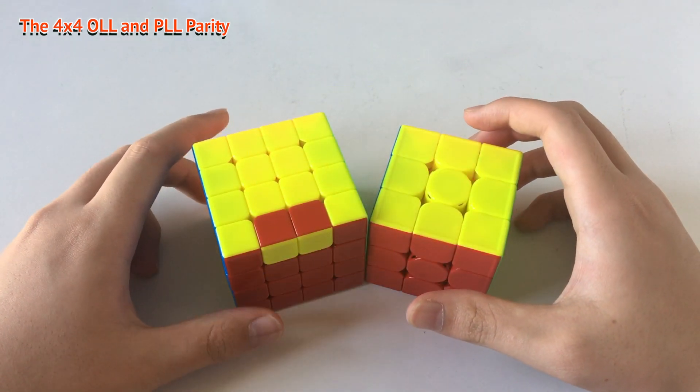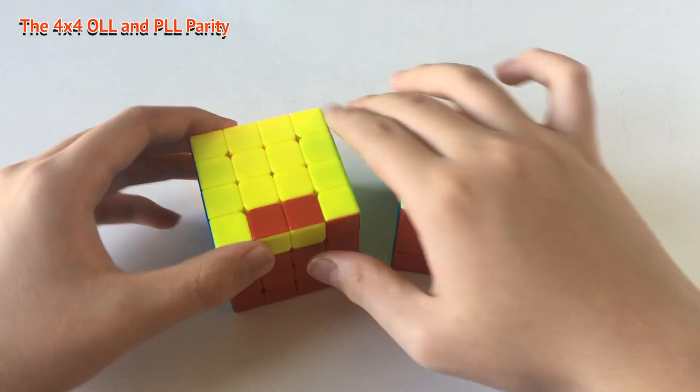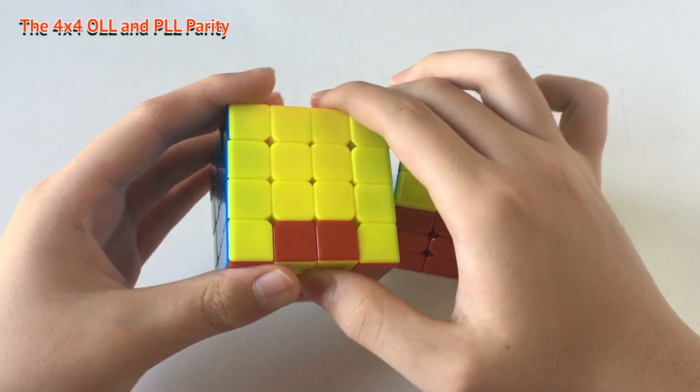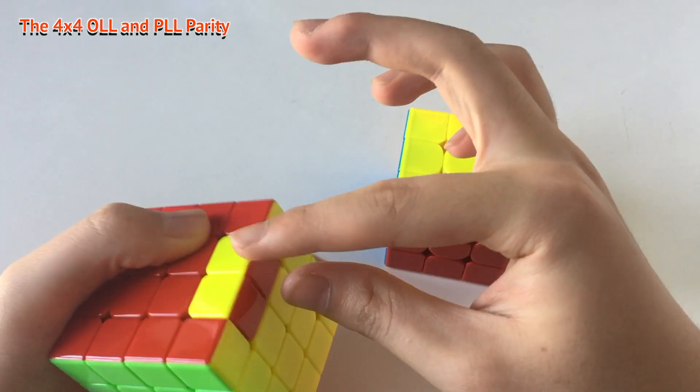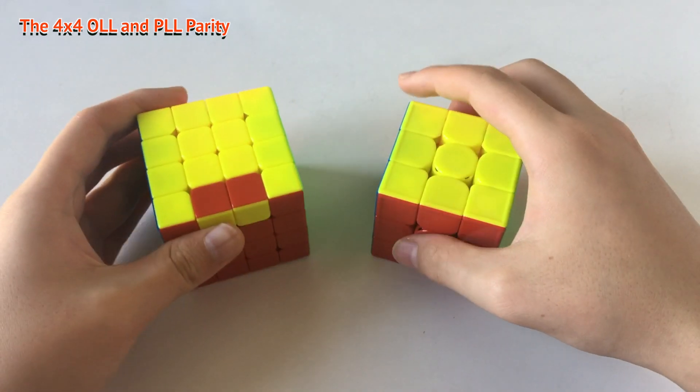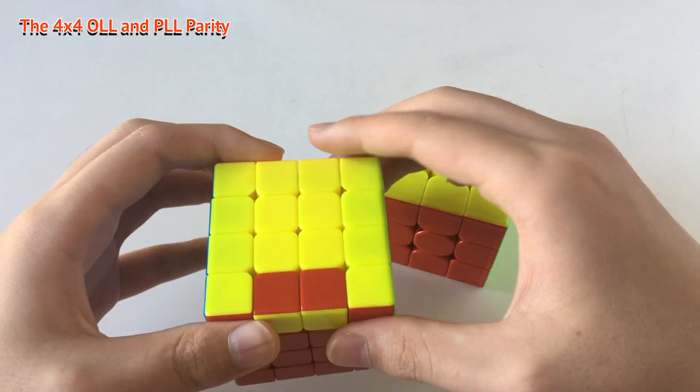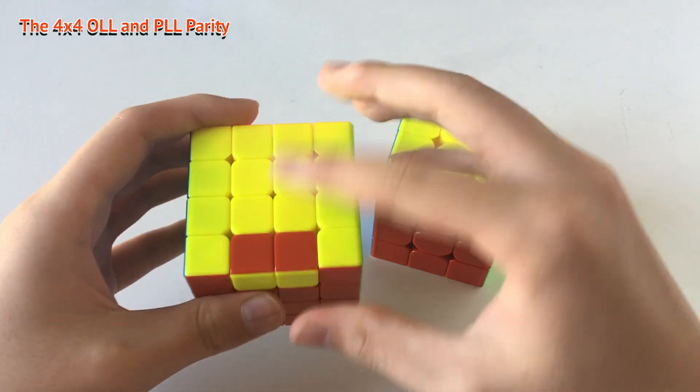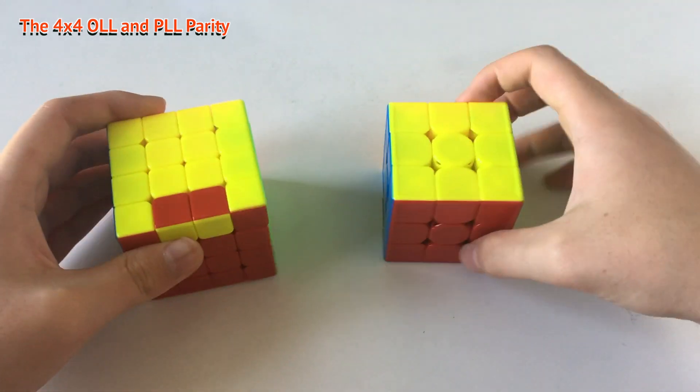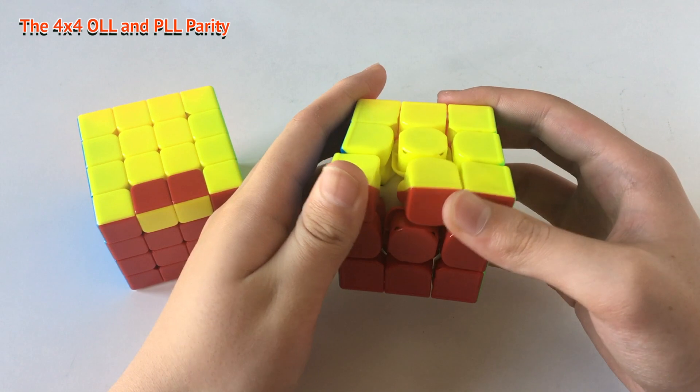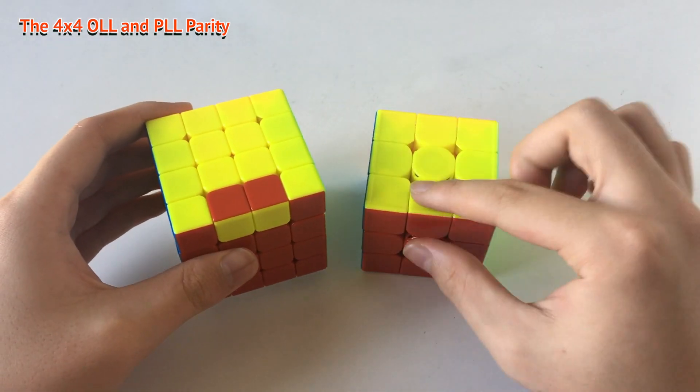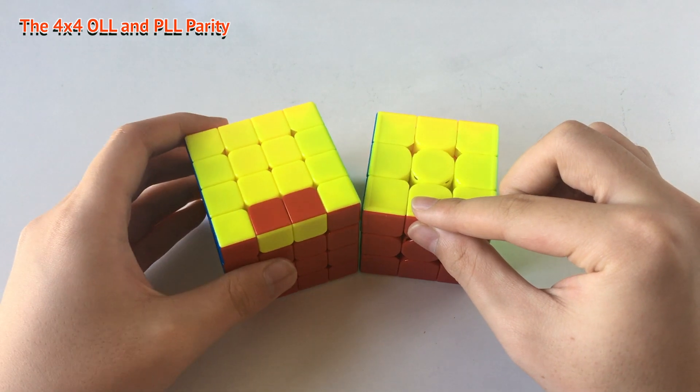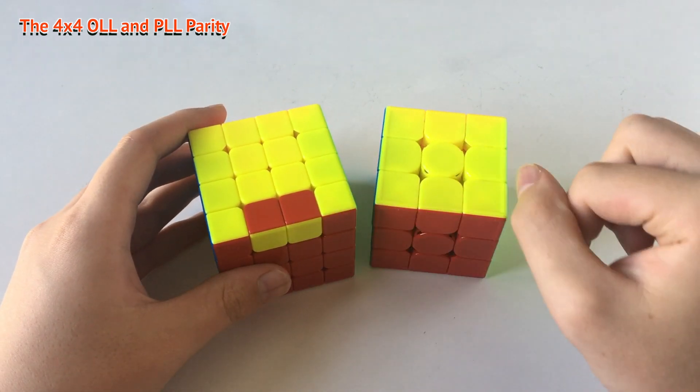This is an example of the OLL parity. This case has an edge flipped during the 3x3 process. That is because the 4x4 actually has two layers, which means it can make this. But for the 3x3, it's impossible to make a case like this with only one edge. And that is how we get a 4x4 parity.